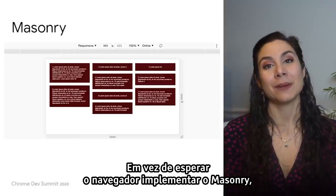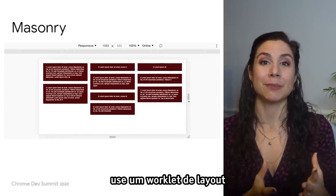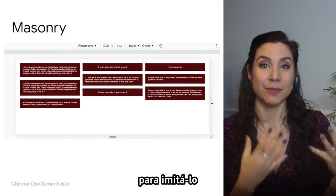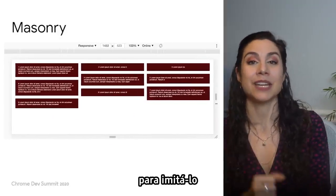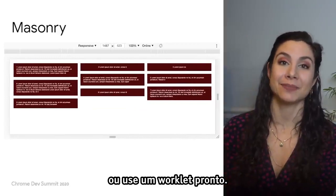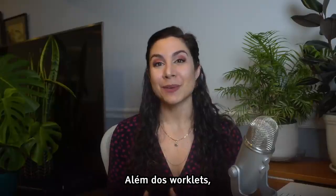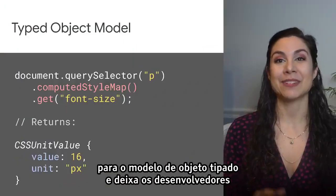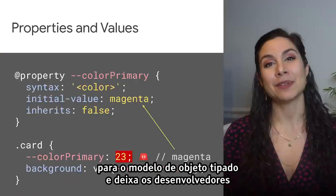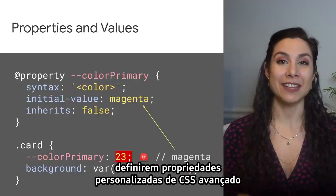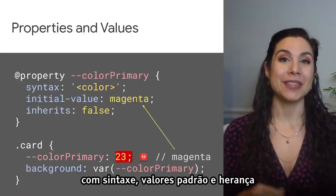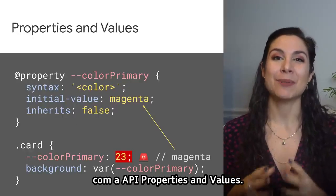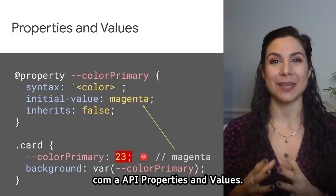Instead of waiting for a browser to implement masonry, you could implement a layout worklet to imitate this browser-based implementation. And beyond worklets, Houdini enables more semantic CSS with the typed object model and enables developers to define advanced CSS custom properties with syntax, default values, and inheritance through the Properties and Values API.